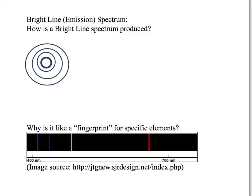Today we're going to talk about how a bright line spectrum is produced. The first thing I want you to look at is an electron on the first energy level — that's going to be our first energy level. To get that electron from the first energy level to the fourth energy level, we have to add energy, usually in the form of a photon or light, which will hop the electron up to the fourth energy level.